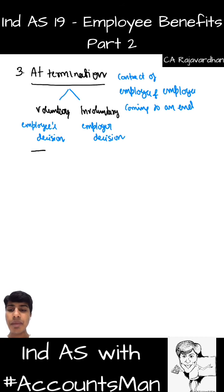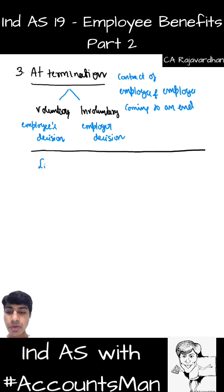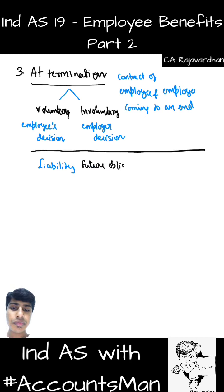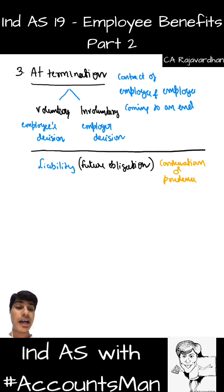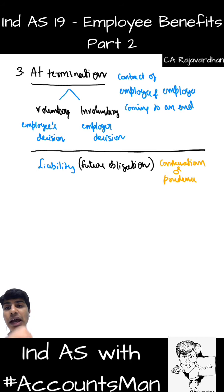You might have promised your employee that you will pay a certain sum on termination. Whenever you have promised such a sum, it will become your liability — a future obligation. As repeatedly noted in this standard, we need to remember the concept of conservatism or prudence, which does not let you wait for the date of actual payment to record the liability. If there is a future expected loss, you have to record it right now. So with respect to this liability, recognition is to be made immediately.